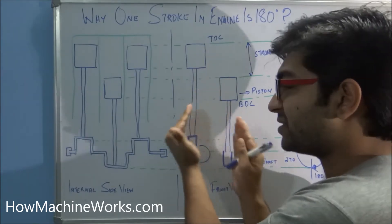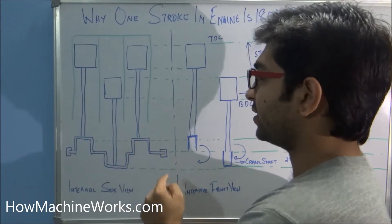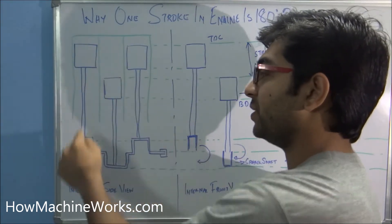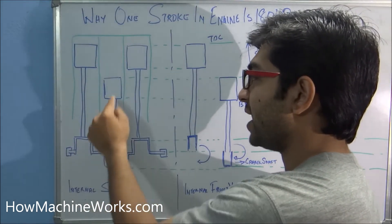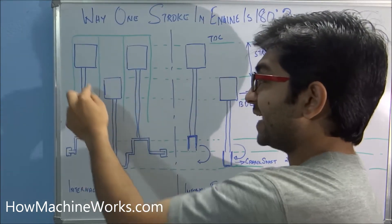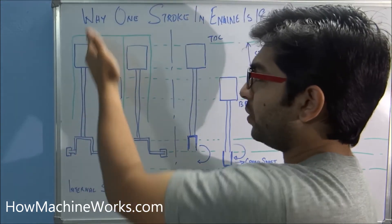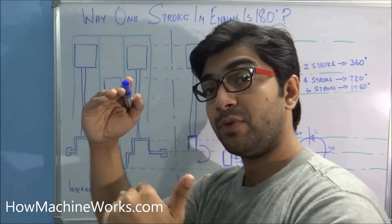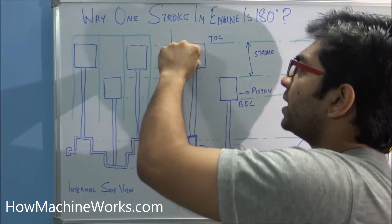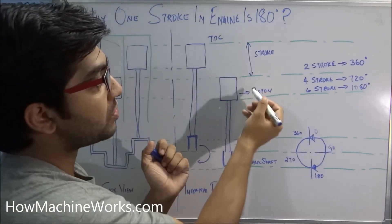Two pistons have been separated so you can see the crankshaft and its design. One piston is on the top — you can see the crankshaft is on the top right now — and the other has come down, connected via the connecting rod. That's how it generally looks: when one piston is at the top, the other will be at the bottom. You can see the top dead center piston and the bottom dead center — that is the stroke length.